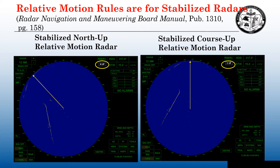These seven relative motion rules are for stabilized radars, as stated in the Radar Navigation and Maneuvering Board Manual — primarily for the north-up stabilized relative motion radars. These rules talk about up-scope targets and down-scope targets. An up-scope target is any relative motion moving in the direction of the heading flasher. So if we look at this picture on the right, the stabilized course-up relative motion radar, up-scope would be any contact moving in the direction of the heading flasher. Conversely, any motion going in the opposite direction would be down-scope. On the north-up stabilized relative motion radar, the picture on the left, this would be considered an up-scope target, and this would be considered a down-scope target. The unstabilized head-up relative motion radars — these rules do not apply. It has to be a stabilized radar.